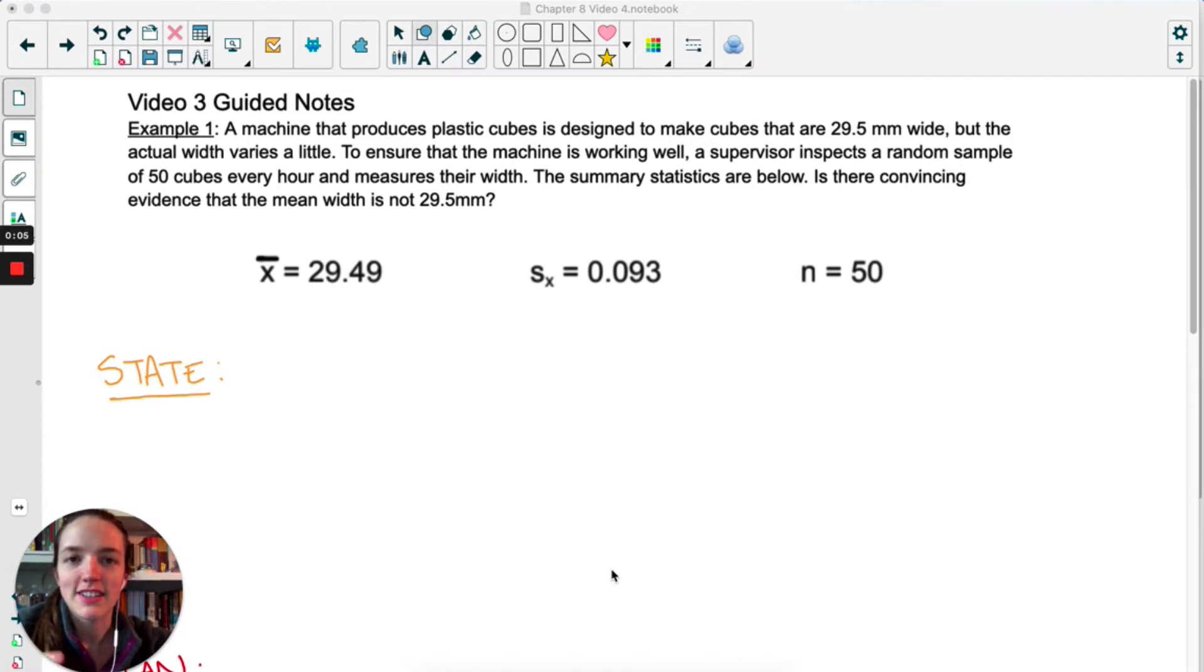In this video, we're going to be looking at significance tests for means. It's going to be really similar to significance tests for proportions, so a lot of the four-step process is going to seem like it's being repeated, and that's because it is.